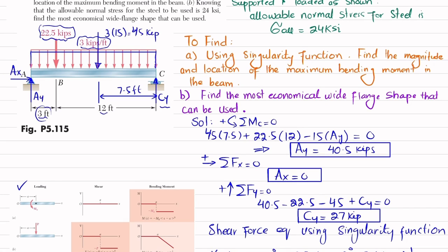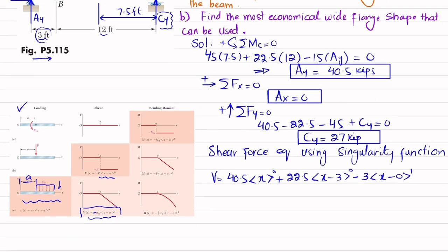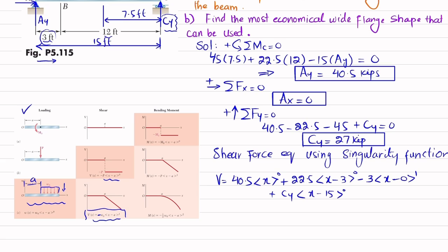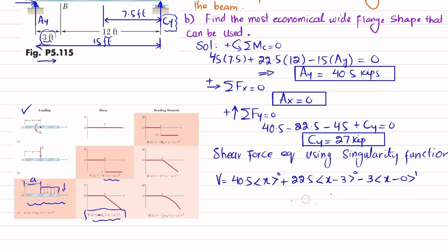The last term would be Cy, but we neglect it because we always neglect the last term when starting from the left — for x less than or equal to 15 feet, the Cy term inside the McCauley bracket is negative and thus equals zero. So the shear force equation (Equation 1) is: V = 40.5⟨x⟩^0 − 22.5⟨x − 3⟩^0 − 3⟨x⟩^1.